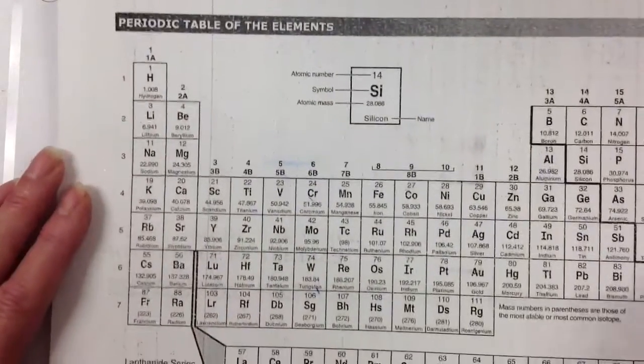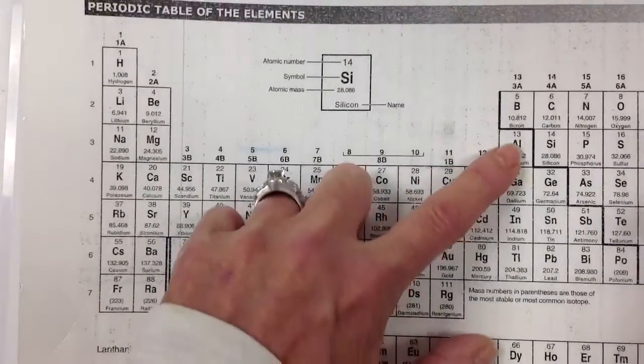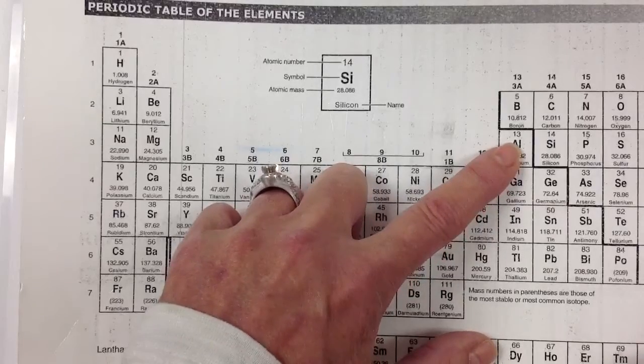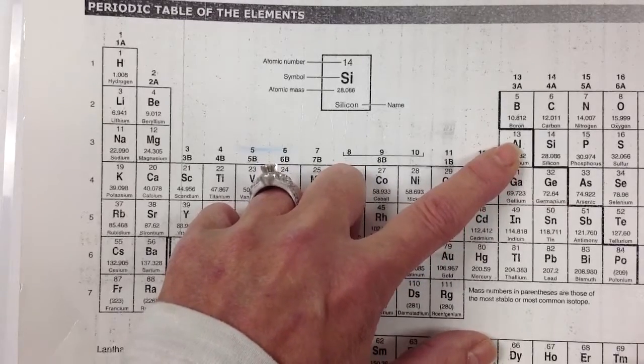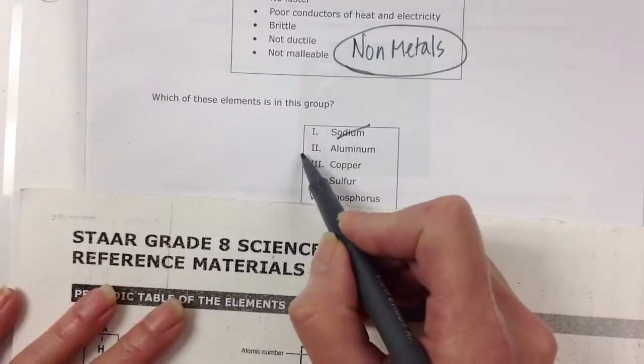Aluminum. Well, if you remember, aluminum is right here on the left side of the stair step. So aluminum must be a metal. So it is not one as well.